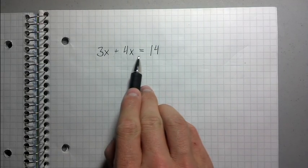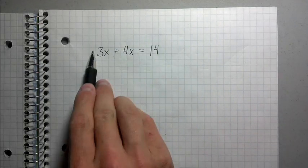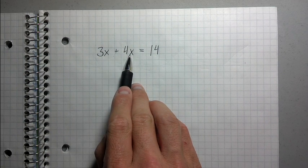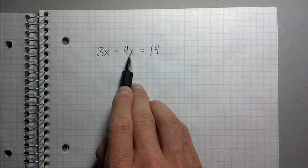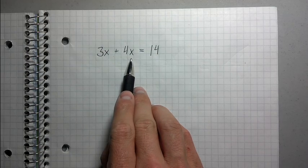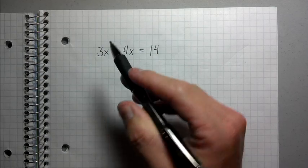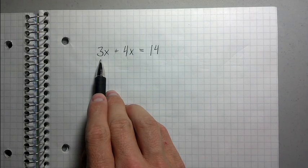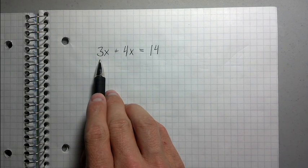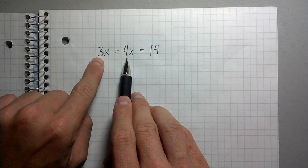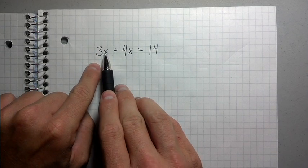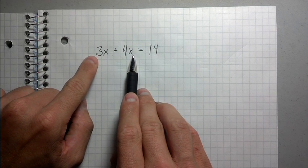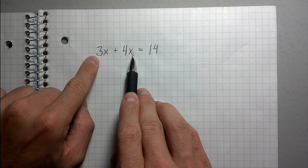We're solving for x, which means trying to get x by itself. The first step is to combine like terms, putting terms together that are of the same type. 3x and 4x are like terms because they're both a number times x. That means I can combine them into a single term.